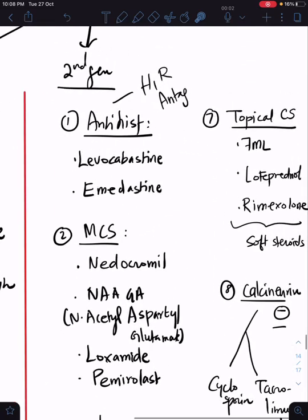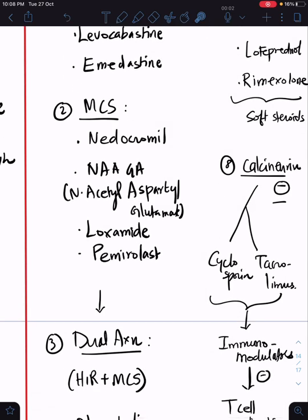Now coming to the main and more important ones: topical corticosteroids. Yes, there is a role for topical corticosteroids, but not in your normal allergic conjunctivitis—only in more severe forms where you want to reduce symptoms as early as possible. Always try to keep it short and try to taper the dose. The three important corticosteroids are FML (fluorometholone), loteprednol, and rimexolone. These three are called soft steroids.